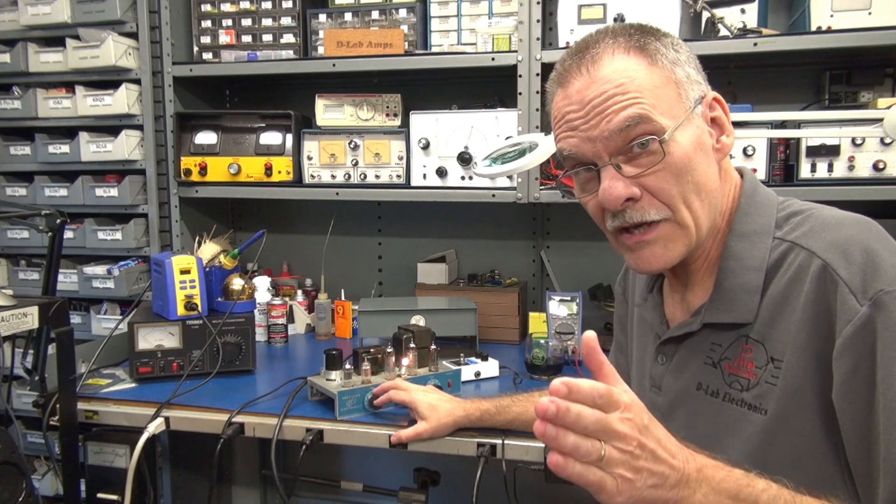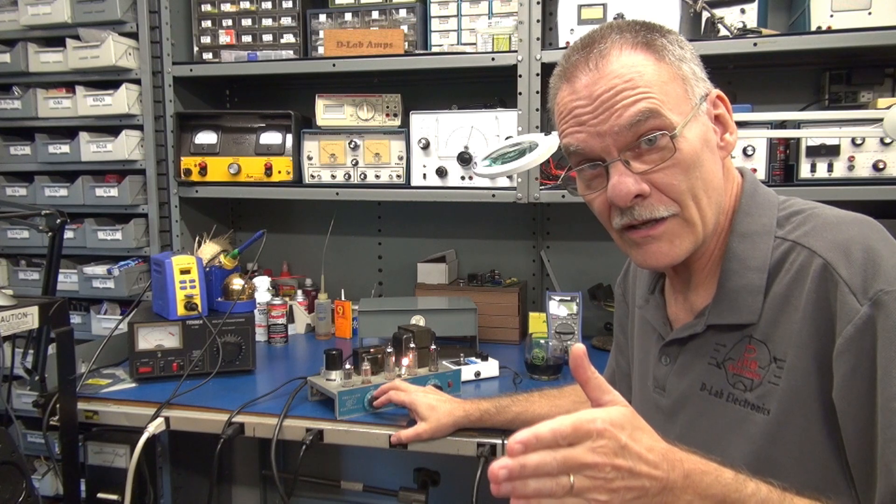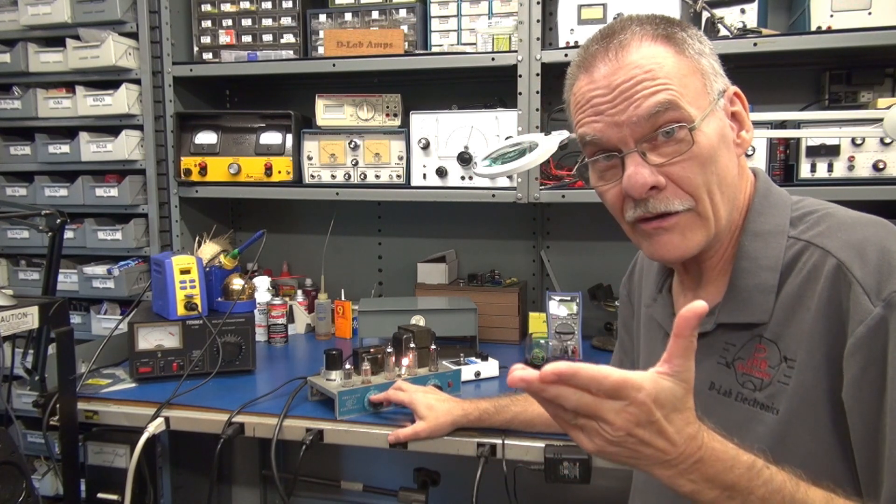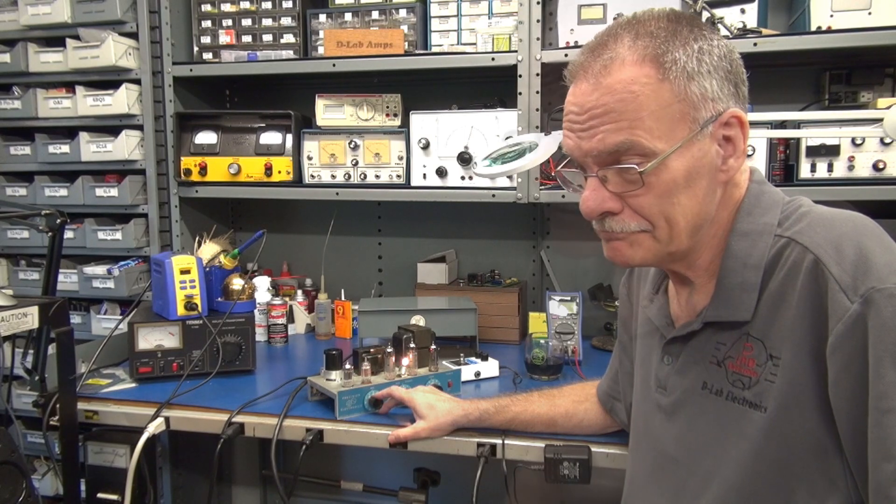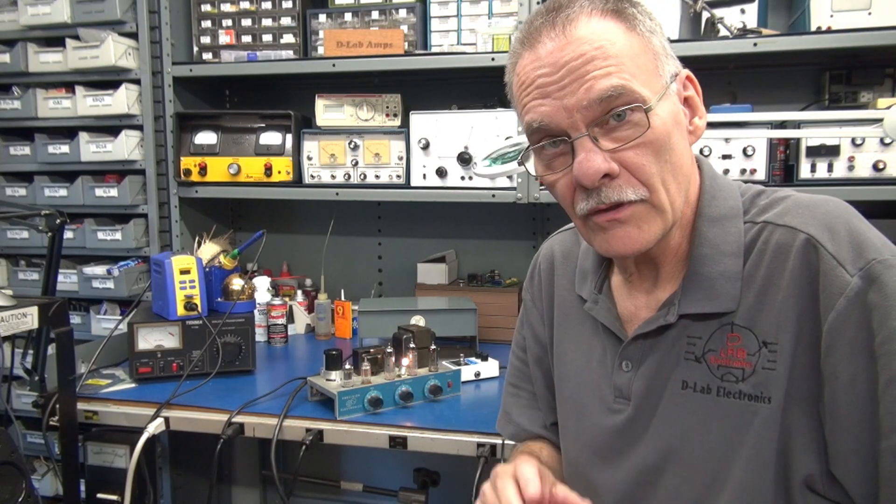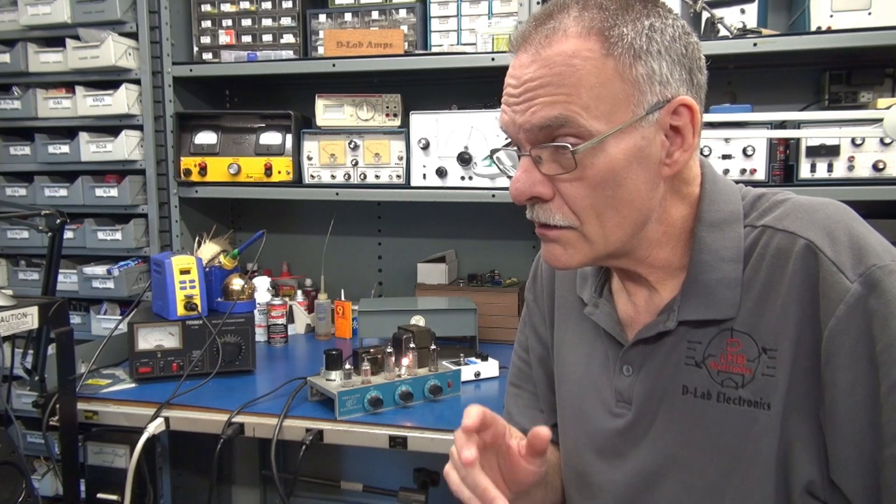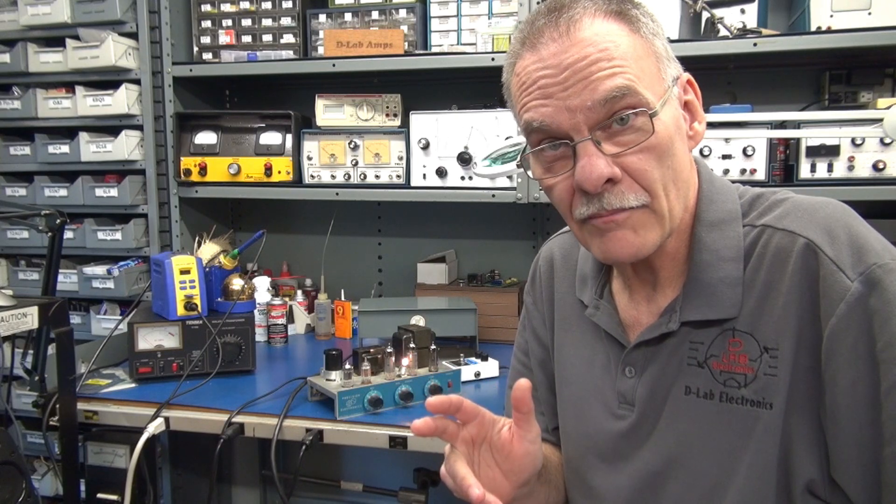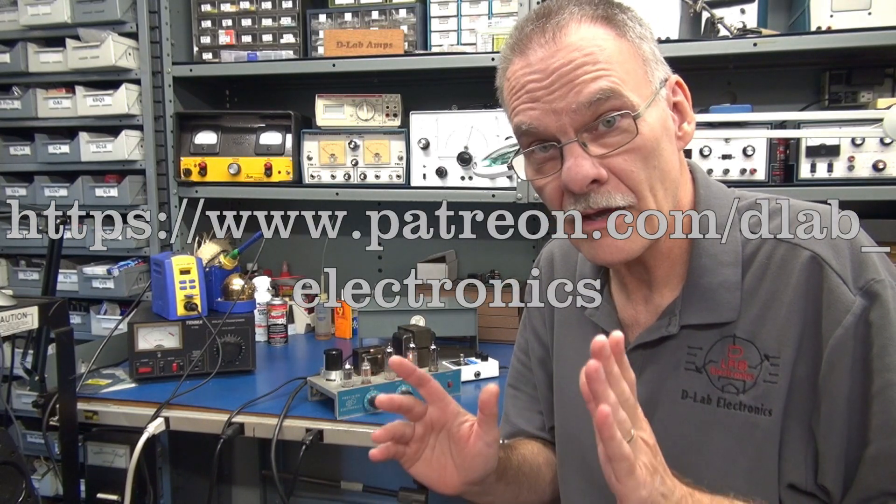So you can do the same thing. If you find one of these little Precision S10s, modify it, you've got a great guitar amp. If you'd like more information on how to perform this modification yourself, take a look at my Patreon page, D-Lab Electronics. I have detailed pictures and a schematic available.